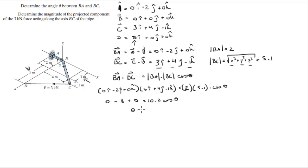So when you solve for theta you're basically going to do the cosine inverse of negative 8 over 10.2. You're going to get that this is equal to 141.7 degrees for this angle right here.